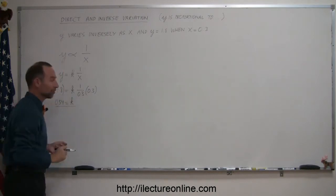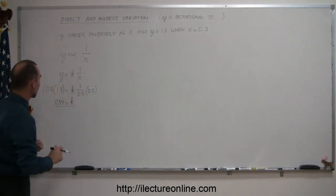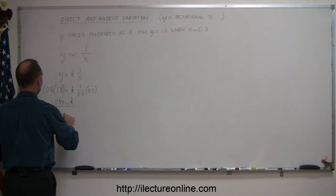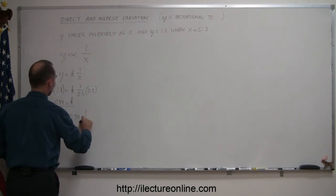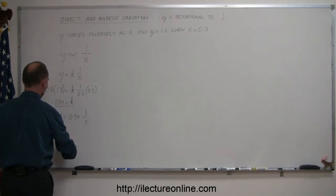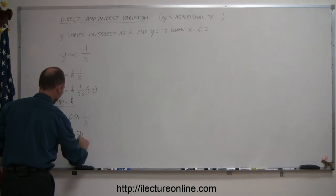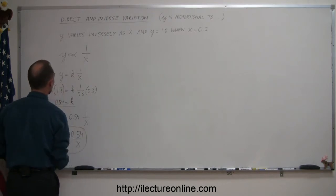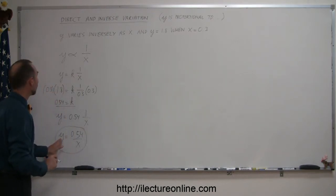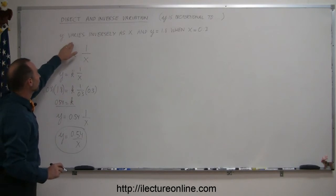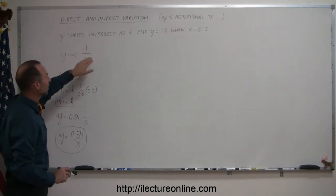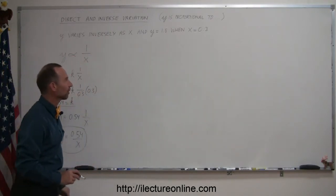So now we have the proper value for k. We can plug that back into our equation and so we have y is equal to 0.54 times 1 over x, or simply written, y is equal to 0.54 over x. That's the equation that relates the variable x to the variable y given the variation, in this case inverse variation with the particular values for x and y.